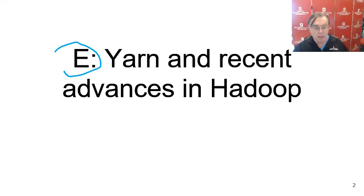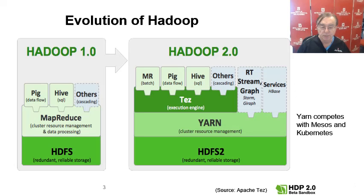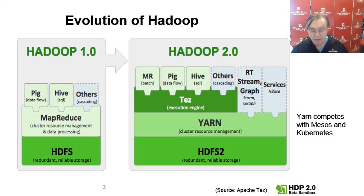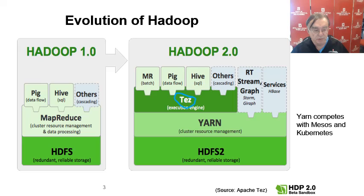This is the fifth part of this particular slide set on Hadoop and MapReduce. Here is a picture from Apache Tez, one of the things added in Hadoop 2.